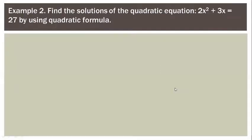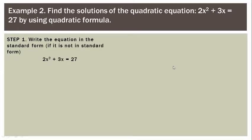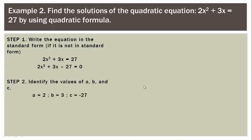Next example: Find the solutions of the quadratic equation 2x squared plus 3x equals 27 using the quadratic formula. Remember the process — write it first in standard form, identify the values of a, b, and c, and plug in the values. The given is not yet in standard form, so we transform it: 2x squared plus 3x minus 27 equals 0. Therefore, a equals 2, b equals positive 3, and c equals negative 27.